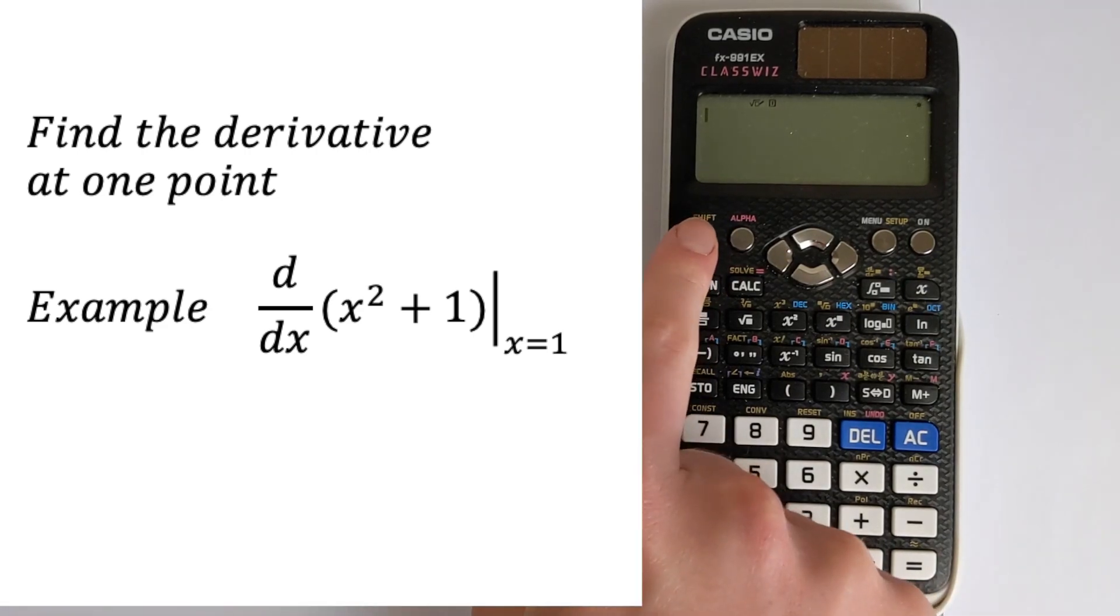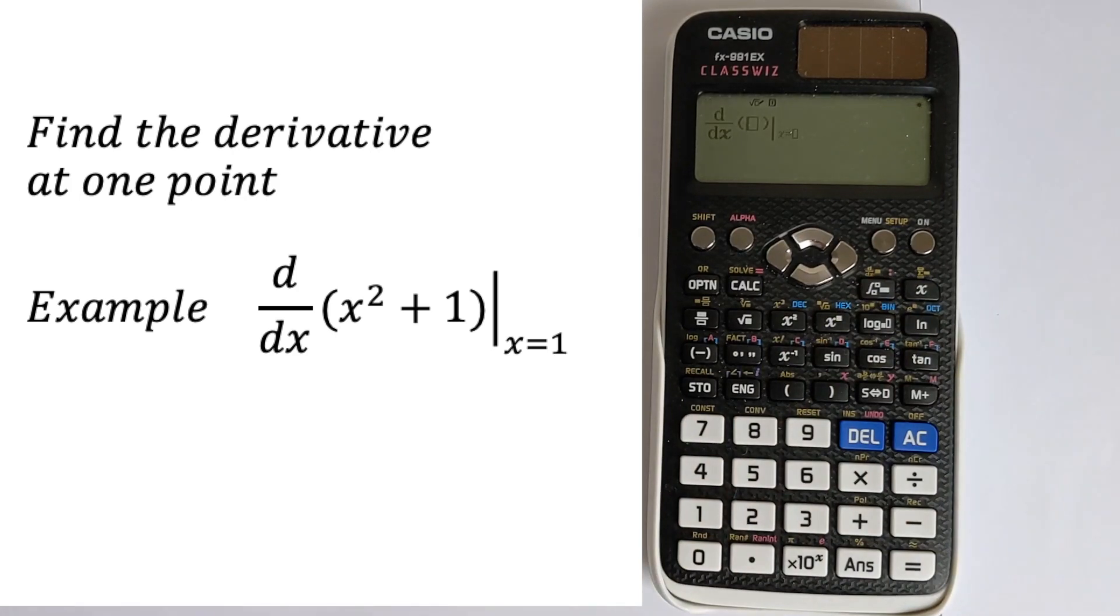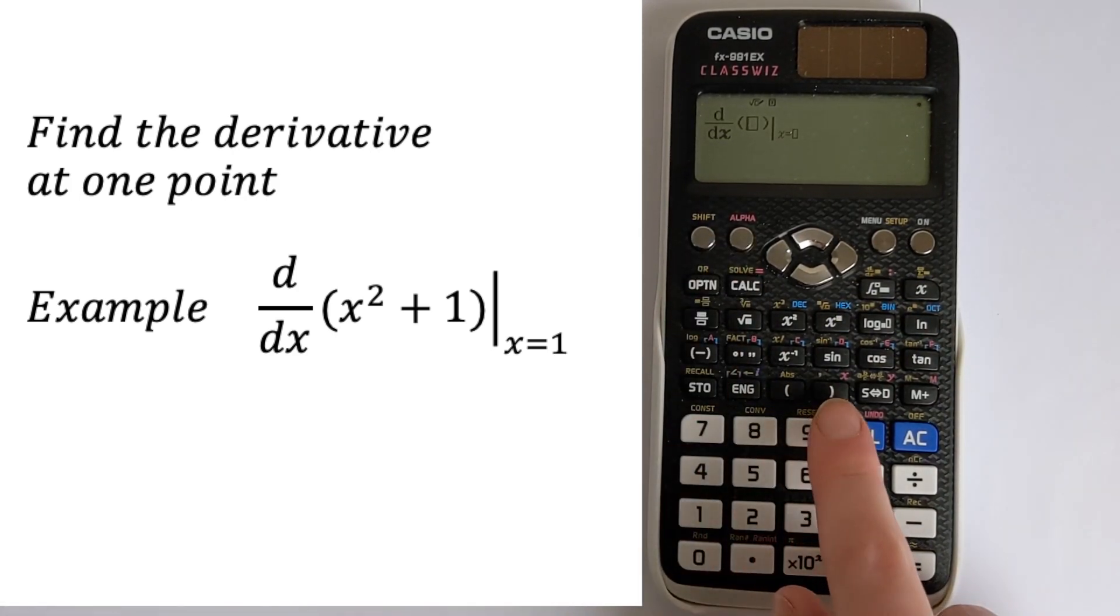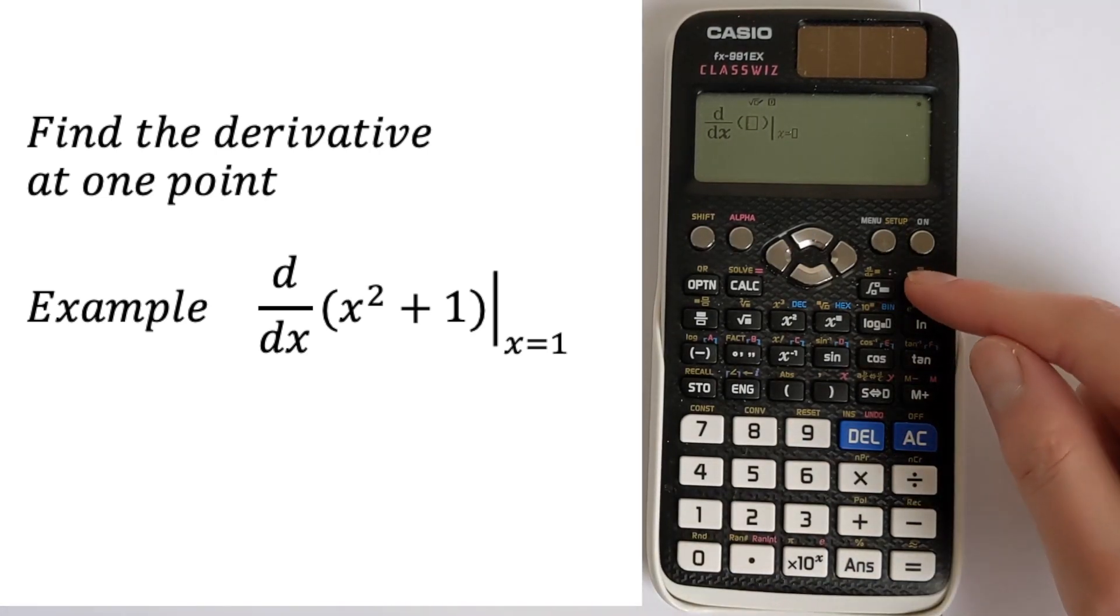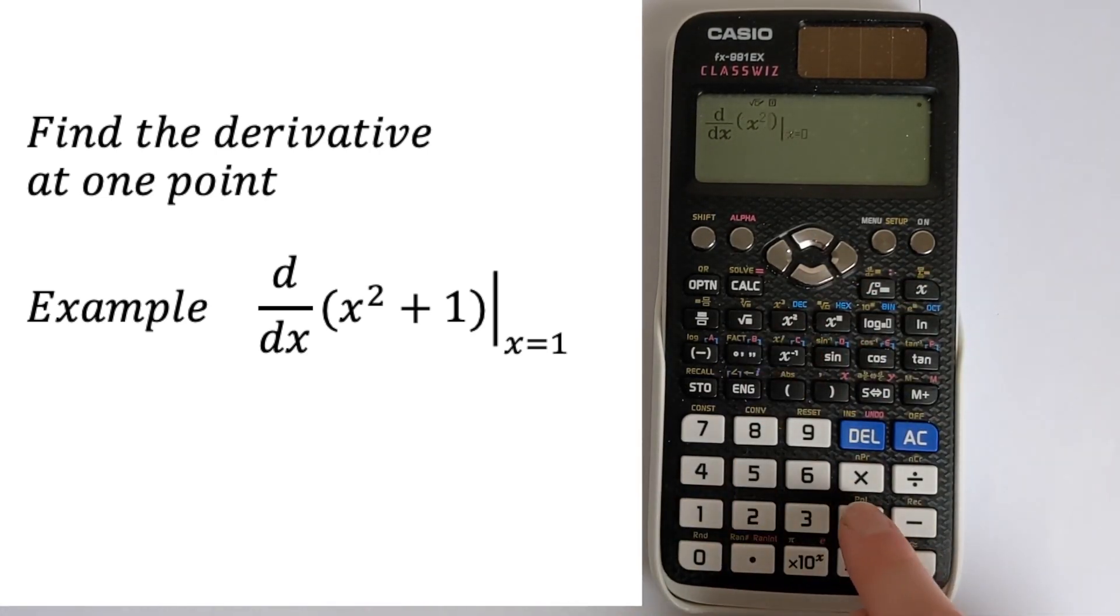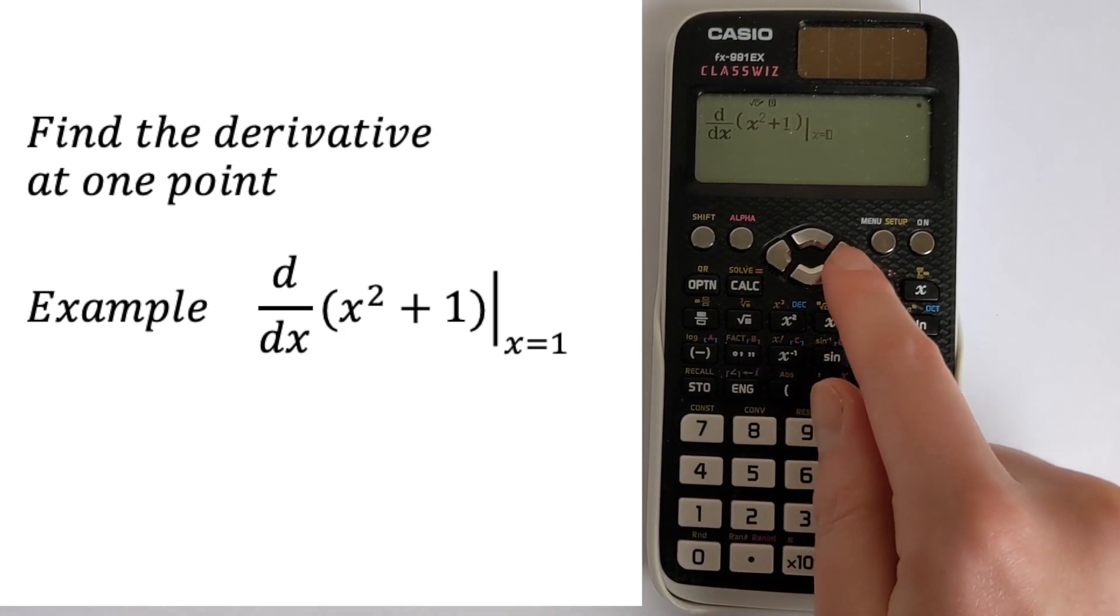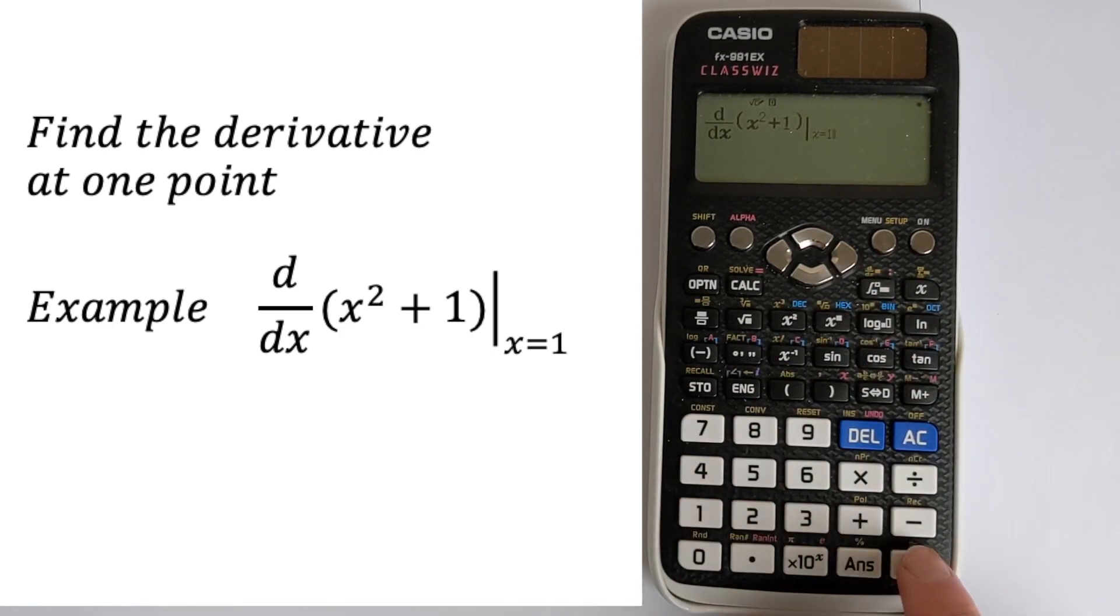The way you would do this is to press shift, then you can access d by dx. You would type it in. Don't use alpha and x, that's a waste of time. You've got this nice x here, so you can do x. Then go straight to squared plus 1, navigate across, and you can evaluate it at x equals 1.